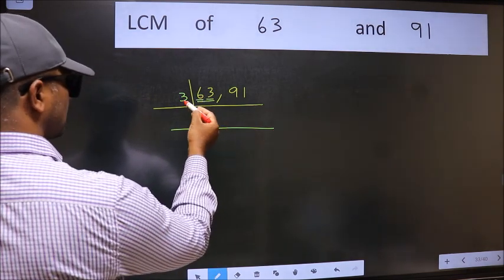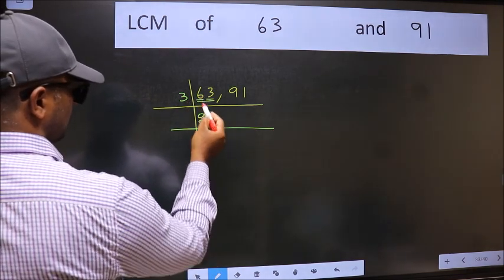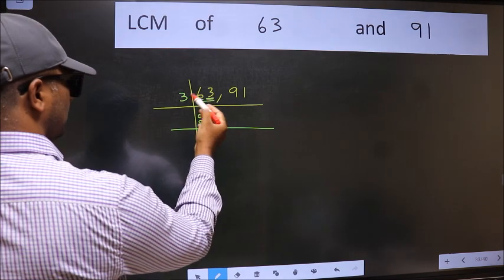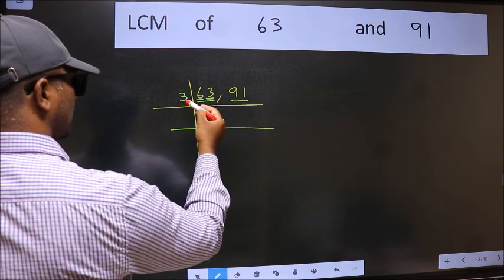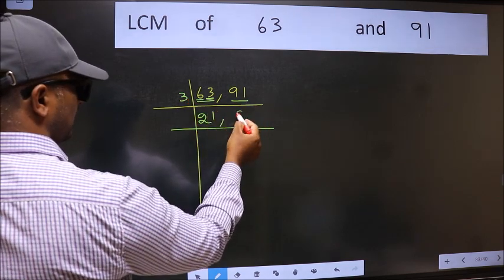First number 6. When do we get 6 in the 3 table? 3 times 2 is 6. The other number 3. When do we get 3 in the 3 table? 3 times 1 is 3. The other number 91 is not divisible by 3, so you write it down as it is.